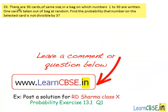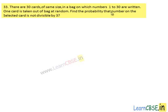Question 33: There are 30 cards of the same size in a bag on which numbers 1 to 30 are written. One card is taken out of the bag at random. Find the probability that the number on the selected card is not divisible by 3.